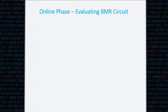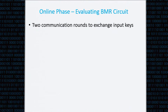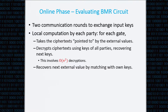After constructing the circuit comes the online phase in which the parties actually evaluate the function. Only at this point do the parties have to choose their inputs — the entire BMR circuit construction can be done before the parties choose their inputs. The online phase starts with two small communication rounds in which they exchange the input keys, and after that it's only local computation. For each gate, the parties take the ciphertext and decrypt it using the keys to recover the keys of the output wire, then compare with their own keys and recover the external value. Each party has to do decryptions of all encryptions by all parties, so the total number of decryptions is O(N²).